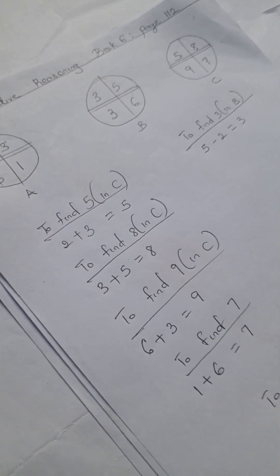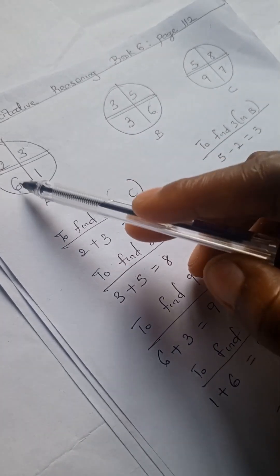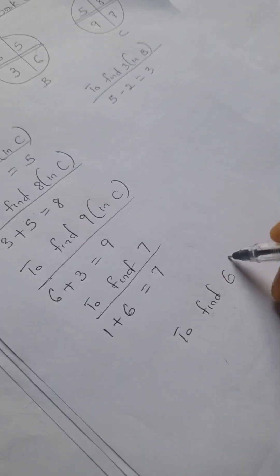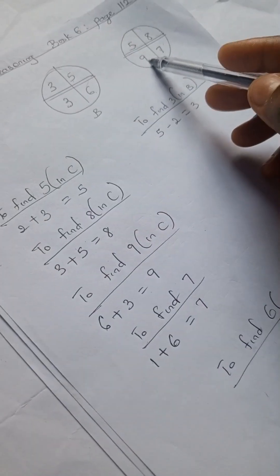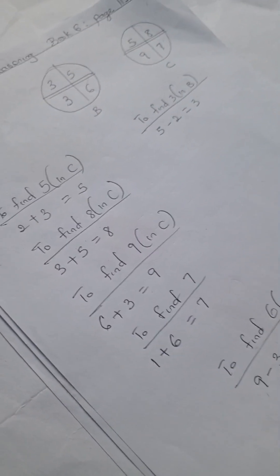Okay, and to find any number here, maybe you want to find 6 here. To find 6 in A here, we're going to have 9 here minus 3, 9 minus 3, that gives us 6.